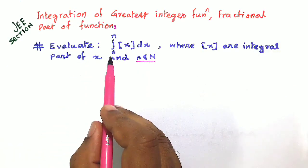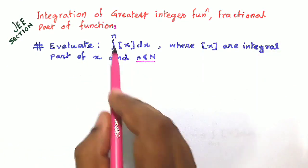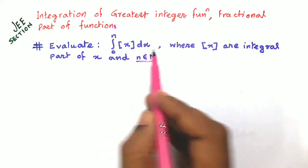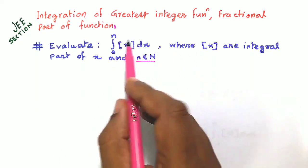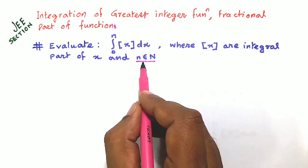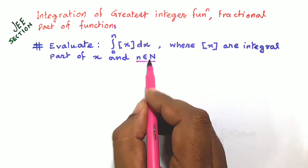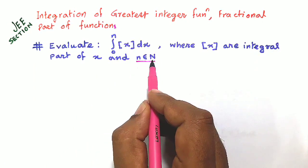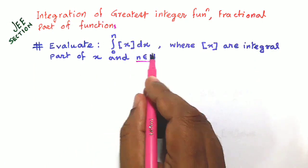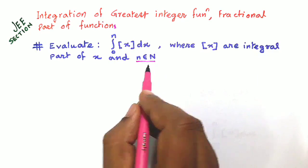Evaluate the integration from 0 to n of the integral part of x dx, where this notation denotes the integral part of x, and n belongs to capital N, that is the set of natural numbers.